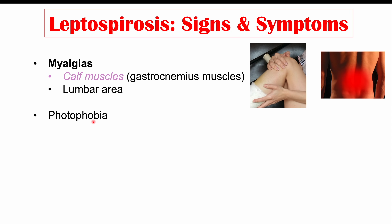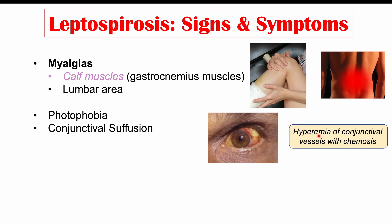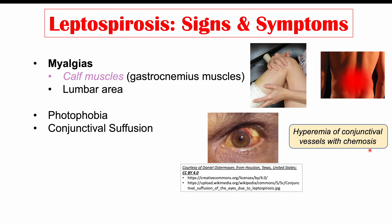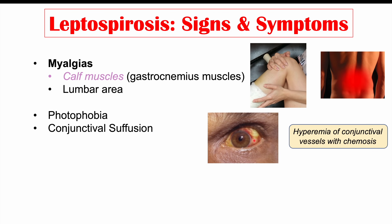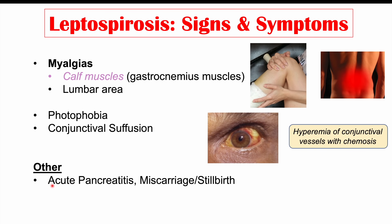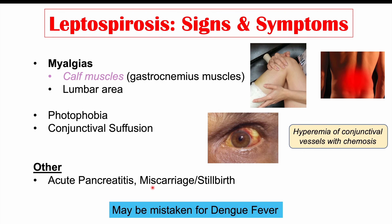Additional findings include lower back pain, photophobia (sensitivity to light), and conjunctival suffusion — reddened eyes with hyperemia of conjunctival vessels and chemosis, which is swelling or edema of the conjunctiva. In rare cases, acute pancreatitis can occur. In pregnant individuals, Leptospira interrogans can cross the placenta and cause miscarriage or stillbirth, especially in the first two trimesters. Because of the high fever and retroorbital pain, leptospirosis can be mistaken for dengue fever.